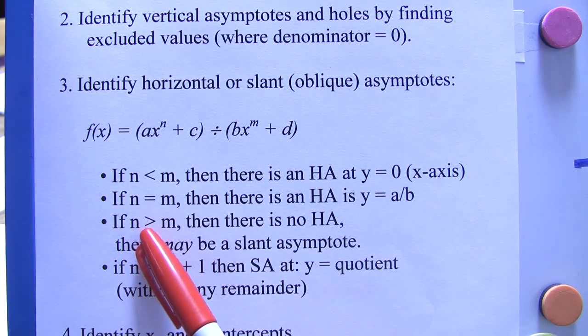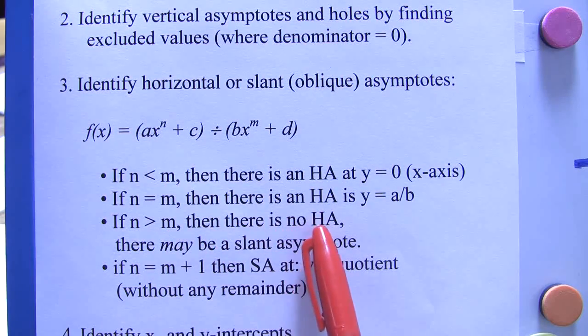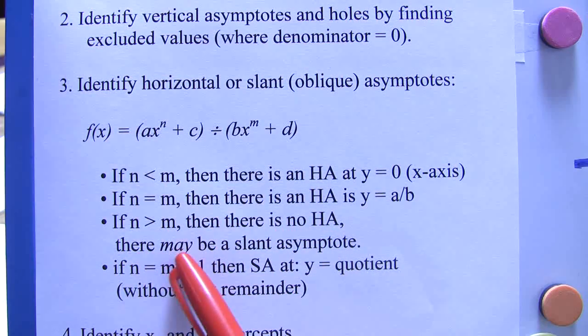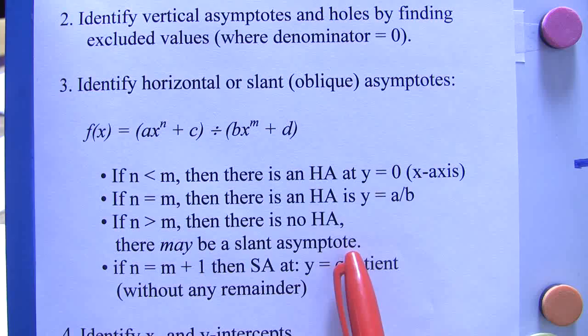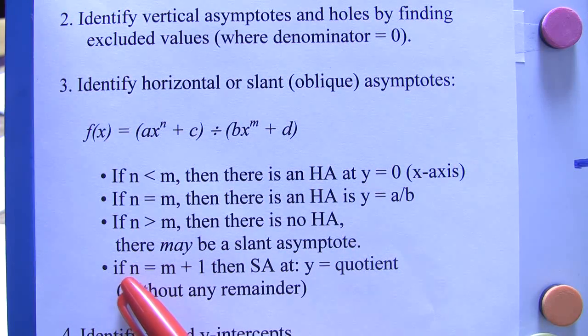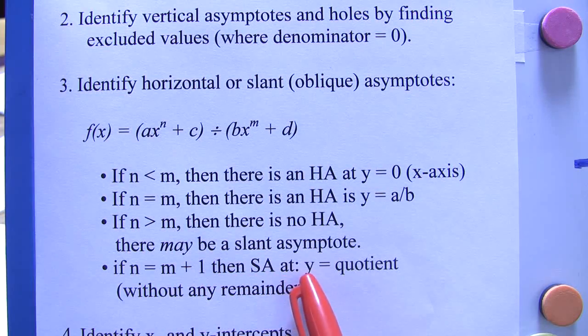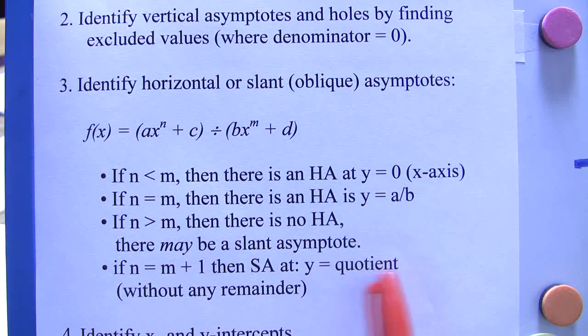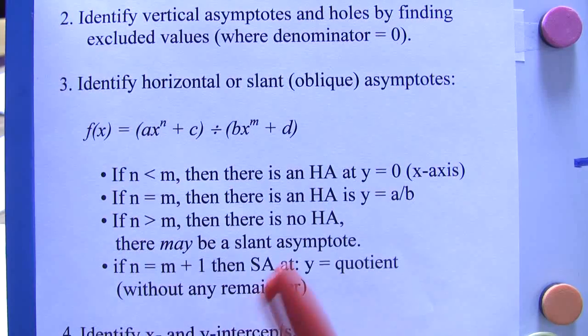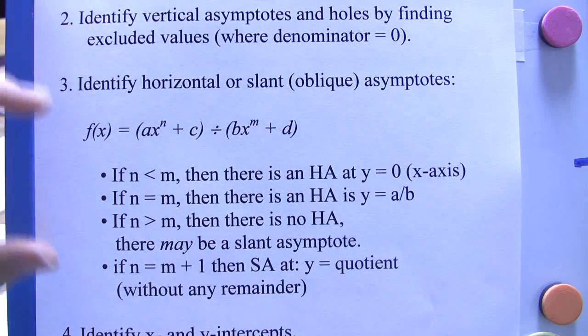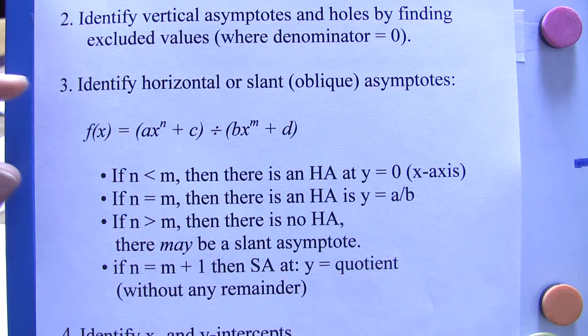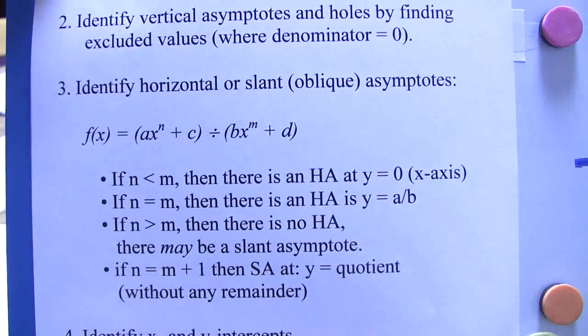If n is greater than m, then there's no horizontal asymptote and there may or may not be a slant asymptote. If n is bigger than m by 1, then there's a slant asymptote at y equals the quotient. And that is for another video. So, these are the points you have to look at to identify horizontal or slant asymptotes.